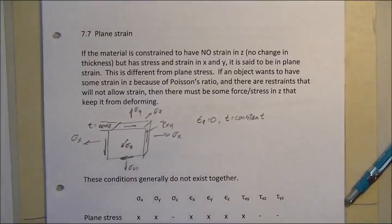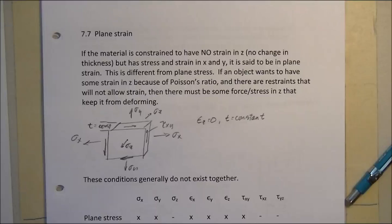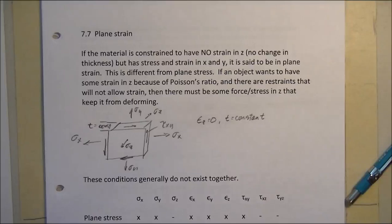Moving on in chapter seven, we're going to look at plane strain in section 7.7. Reviewing plane stress: in plane stress it's two-dimensional stress with stress in x and y. We have strain unfortunately in all three dimensions — strain in x, strain in y, and strain in z — because there is no restraint to move in the z direction, no forces or stresses in the z direction, but we still can have deformation or strain and the thickness changes.